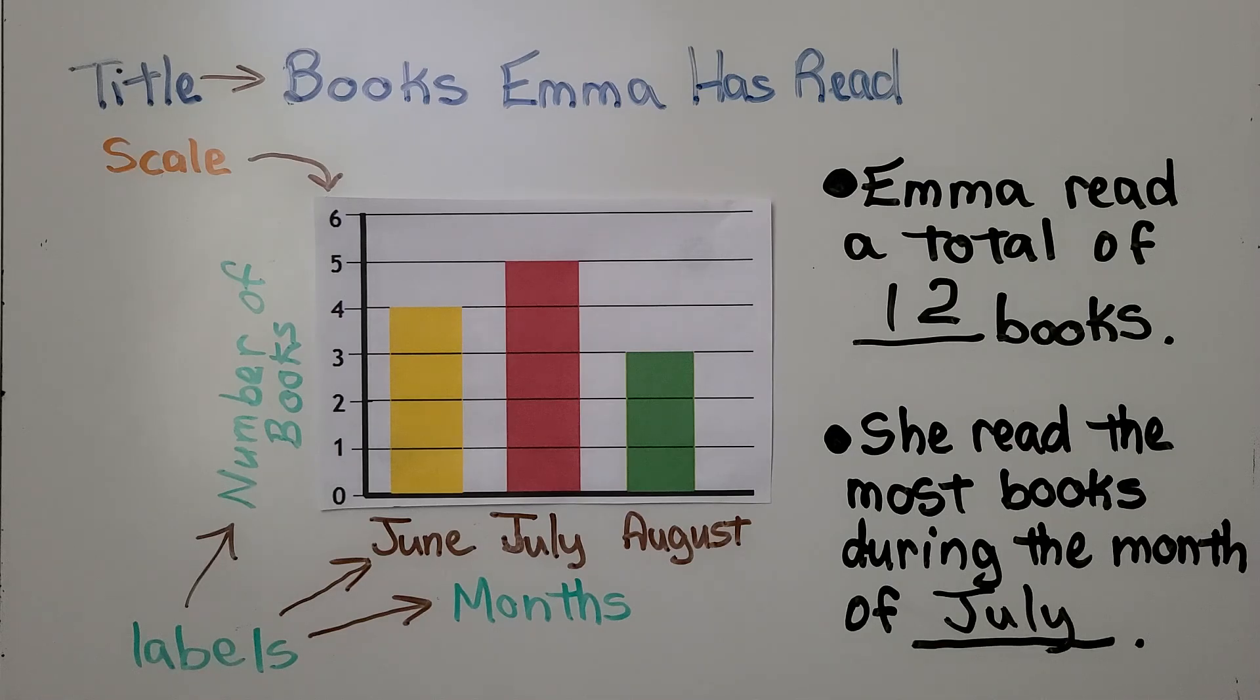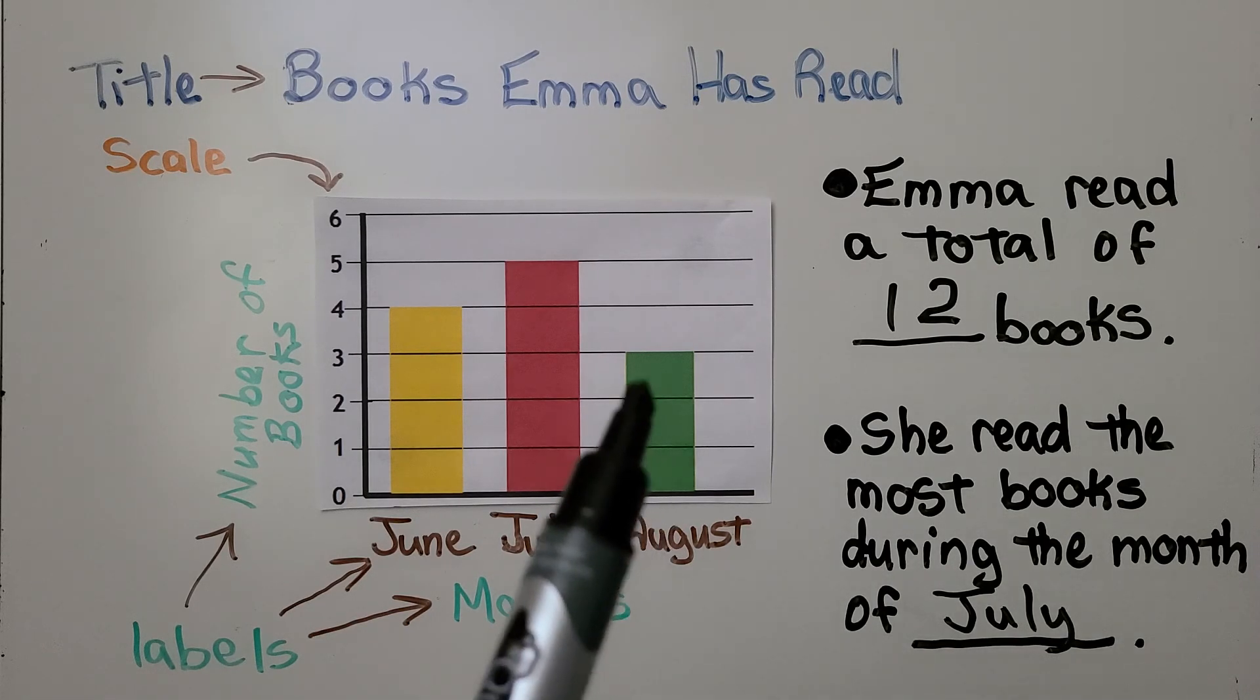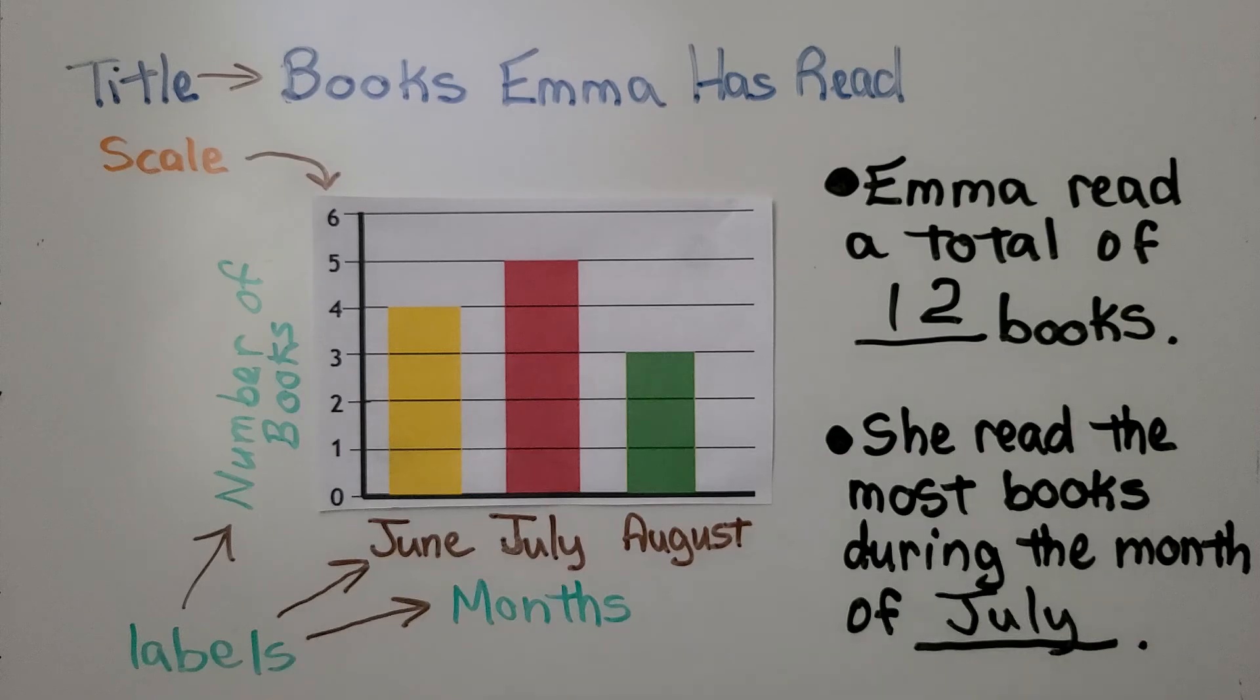Using a bar graph, it makes it very easy to compare data. We can see the month of August was the month she read the fewest books. She only read three.